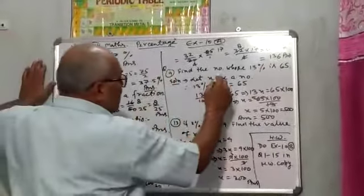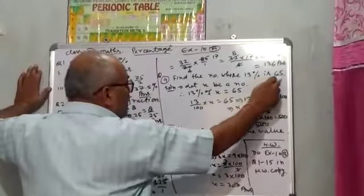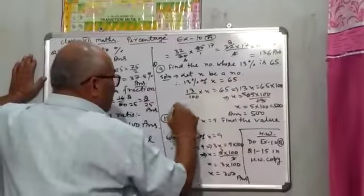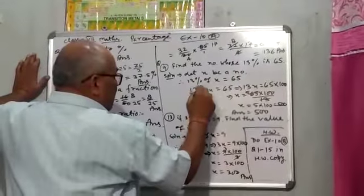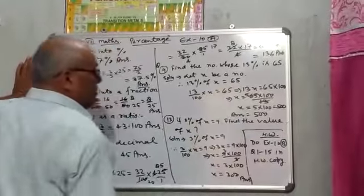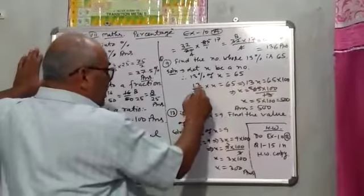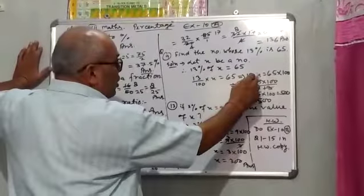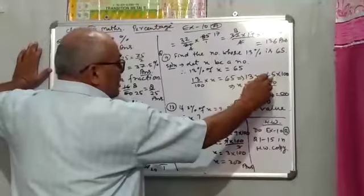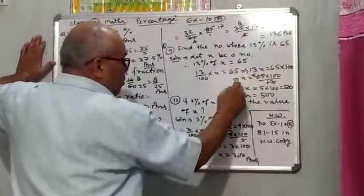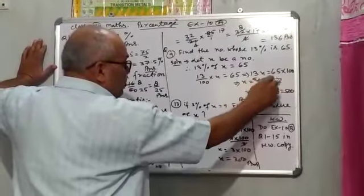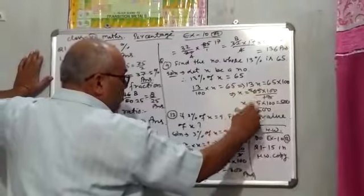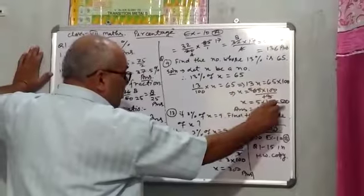Question number 9: Find the number whose 13% is 65. Let x be the number. Therefore, 13% of x equals 65, which means 13 upon 100 into x equals 65, so x equals 65 into 100 divided by 13. Since 13 goes into 65 five times, x equals 5 into 100, which is equal to 500. That is the correct answer.